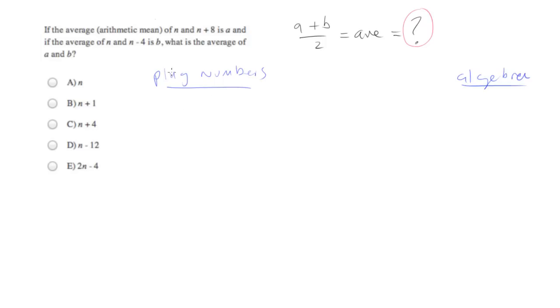And what we want to do is, they start out by telling us the average of n and n plus 8 is a. So let's write that down. So here's the average formula. n plus n plus 8 equals a. And they also tell us the average of n and n minus 4 is b. So let's put that one on here, too. Those should both be divided by 2, by the way. So here are both of our averages.